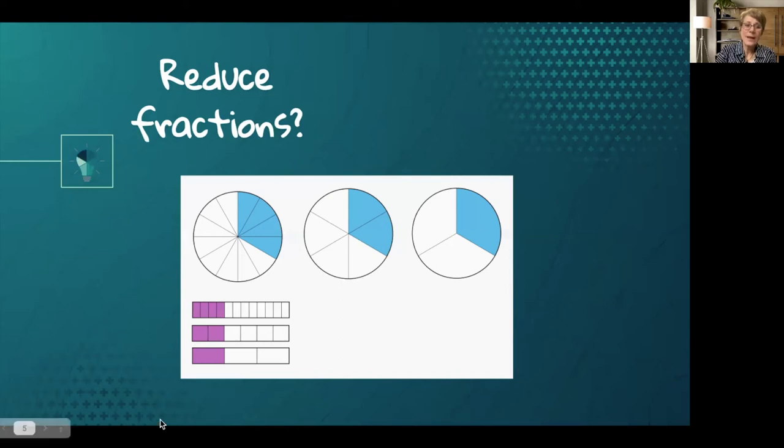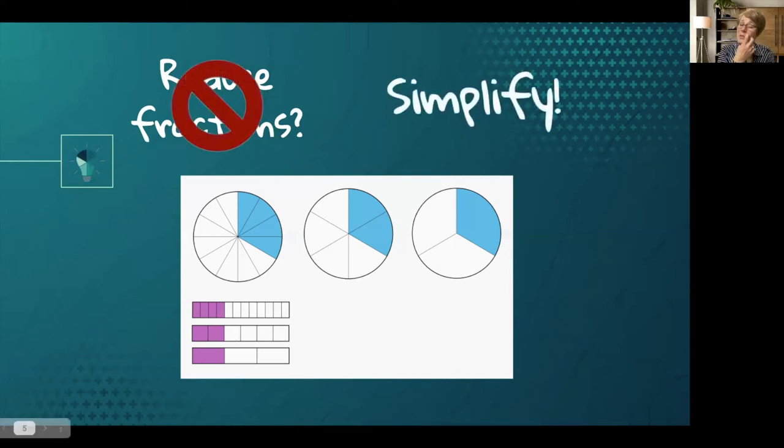Instead, what we want to say is that we are simplifying the fraction or simplification. So, we are obviously taking a circle with a lot of segments, 12 in this case, and simplifying it down to 3, but not reducing the amount that is shaded. A better term would be to say simplify the fraction.